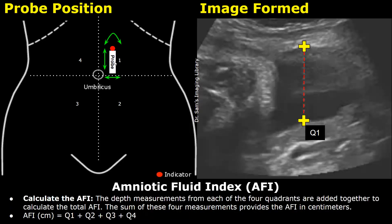This measurement is at quadrant one, which is the left upper quadrant. Move the probe accordingly to find a pocket of amniotic fluid that is free from fetal parts or umbilical cord loops. After you find a pocket, you can take the vertical measurement in this way.